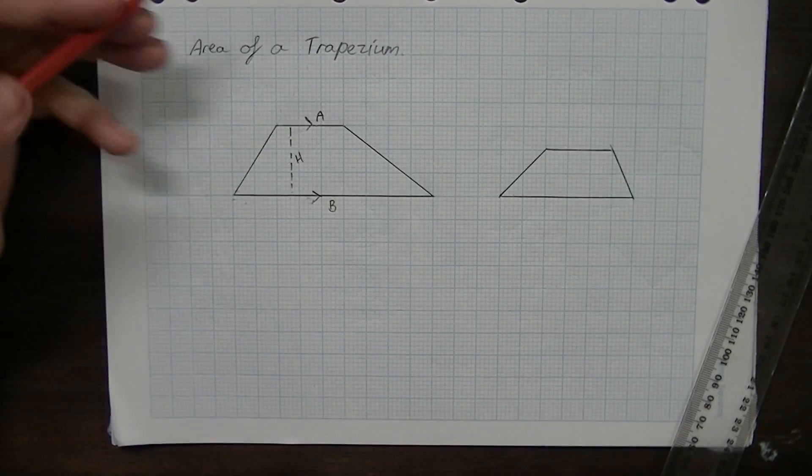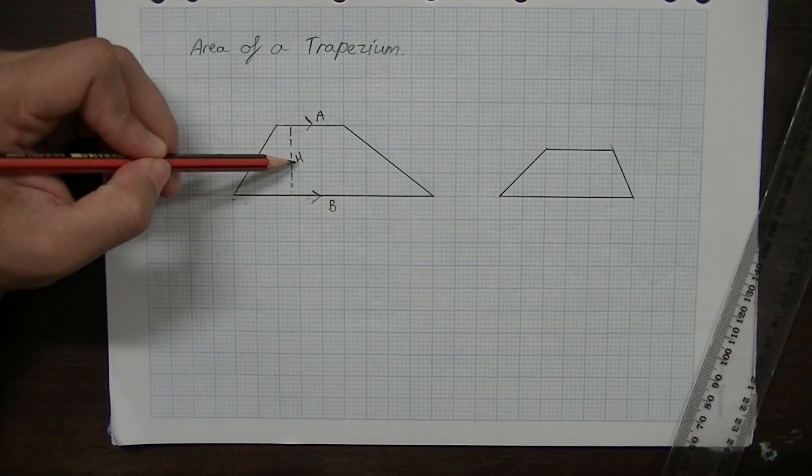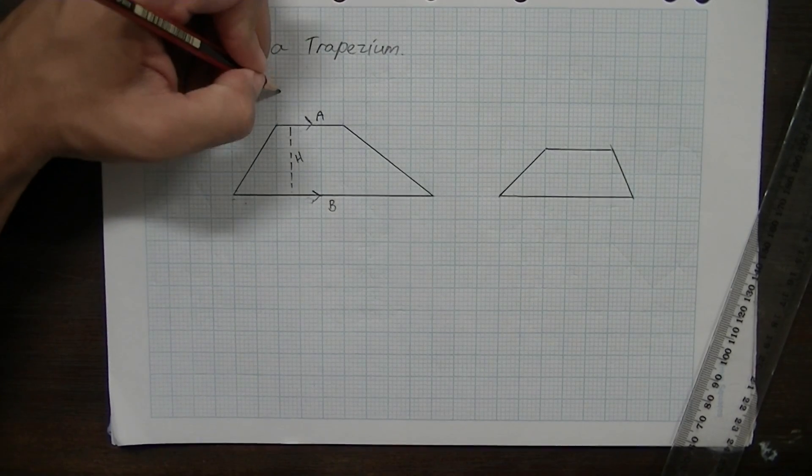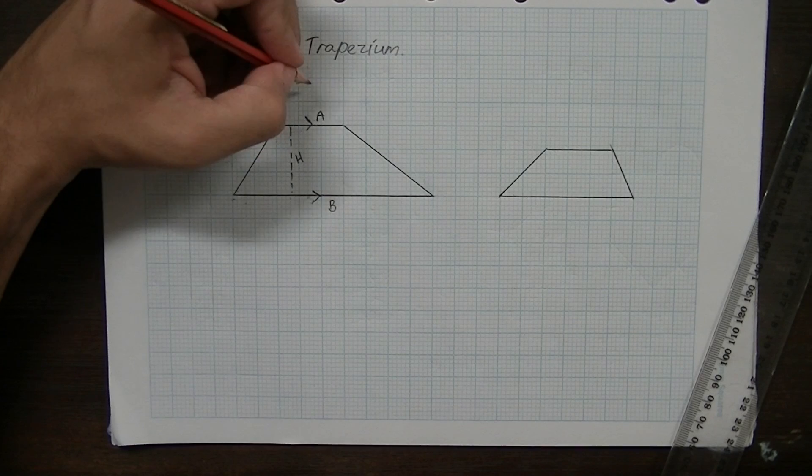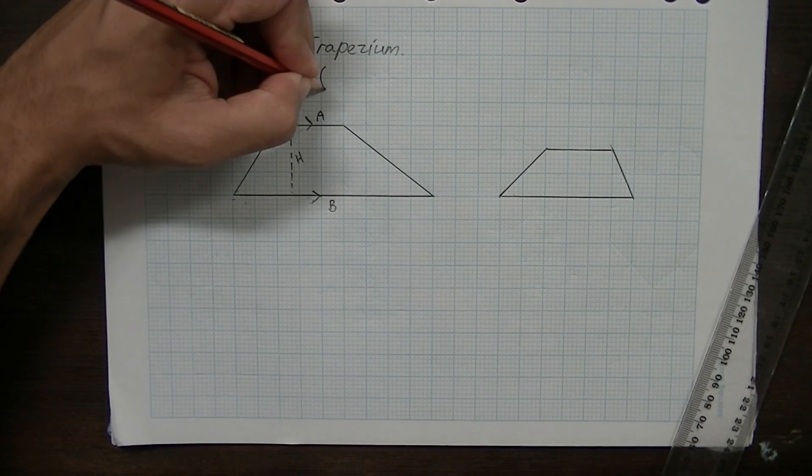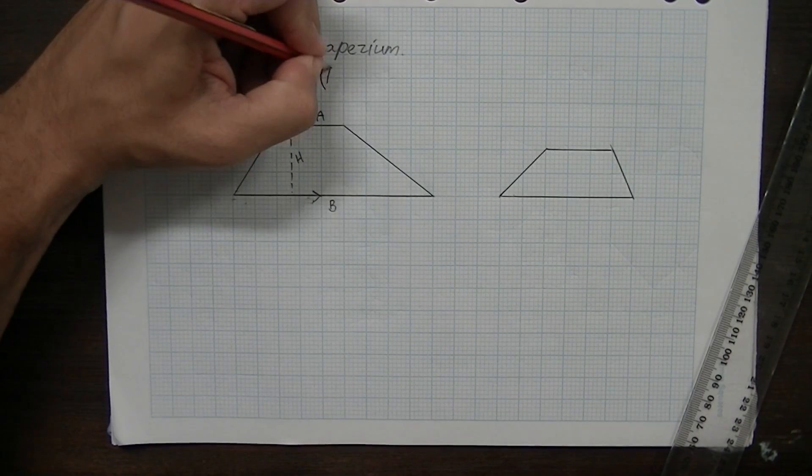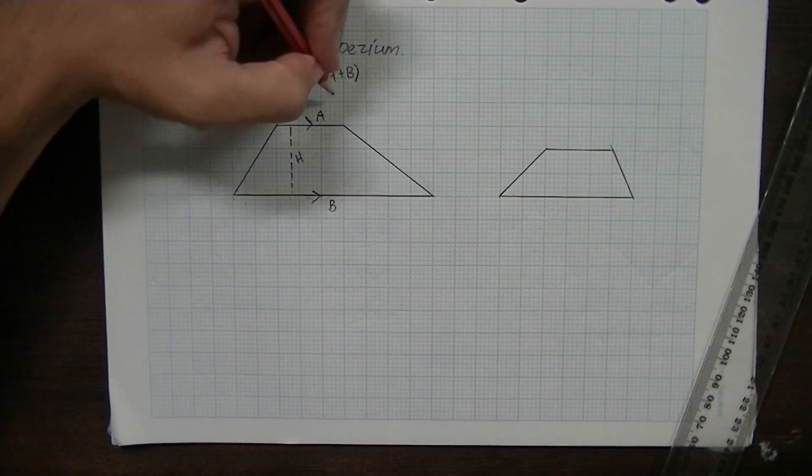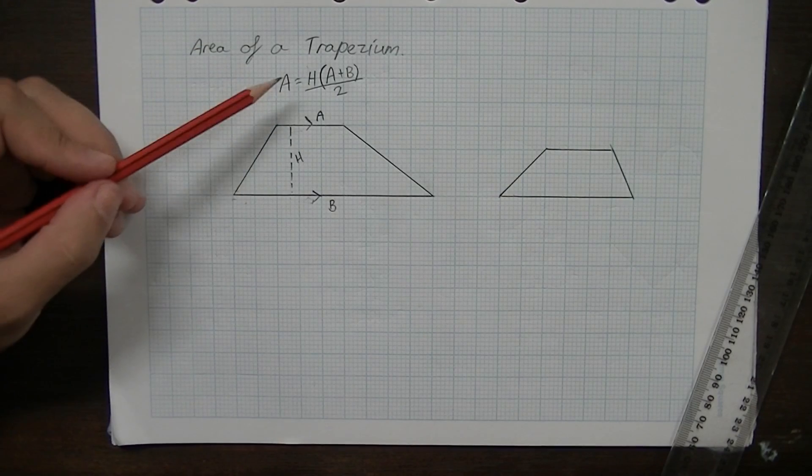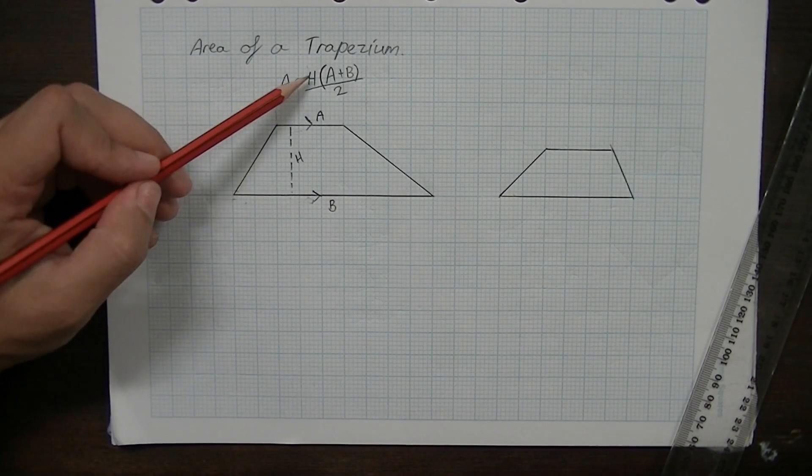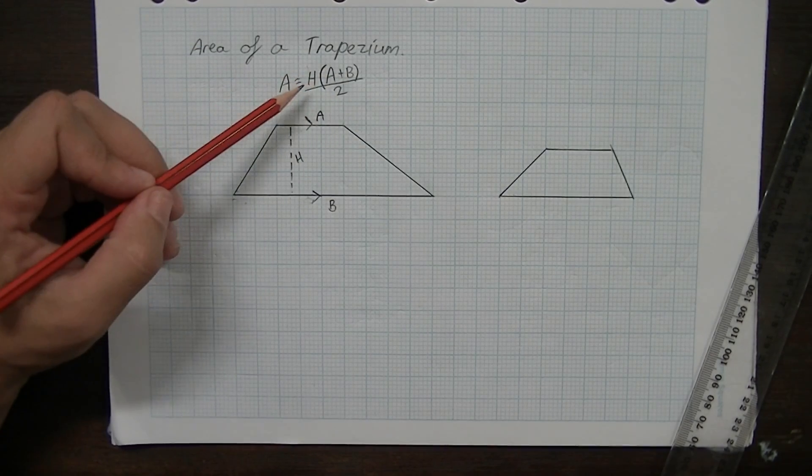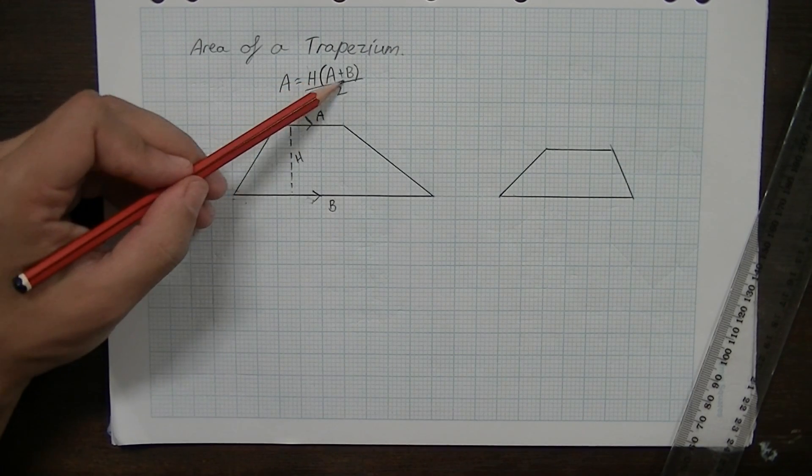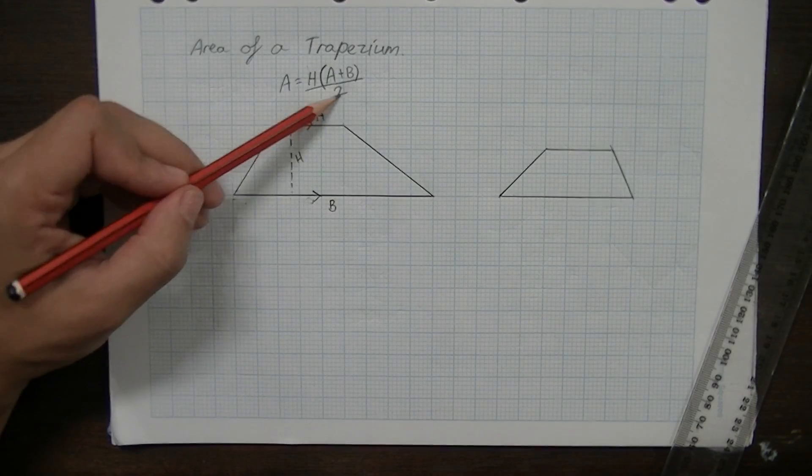I'll just call that H for now. So we have an A, we have a B, we have a H. And the formula for the area of a trapezium, area equals height times A plus B divided by 2. You'll see this formula written in a variety of different ways but this is the easiest way I've found to write it. So height times A plus B all divided by 2.